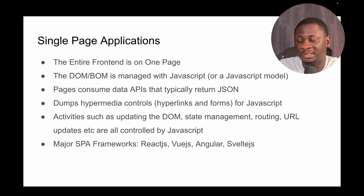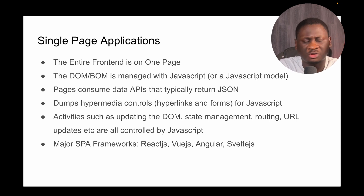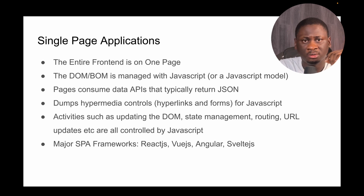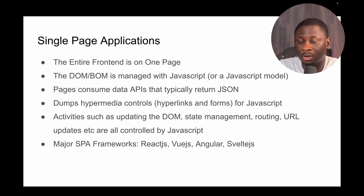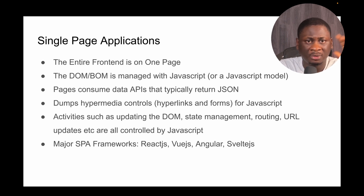So, SPAs to the rescue. What are single page applications? A single page application has the entire front end on one page. Unlike the native Web 1.0 strategy, the entire front end lives on a single page. The DOM — document object model — and the BOM — browser object model — are managed by JavaScript. Your applications also consume what is known as data APIs, which return JSON predominantly.